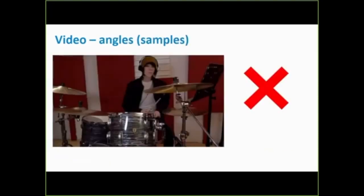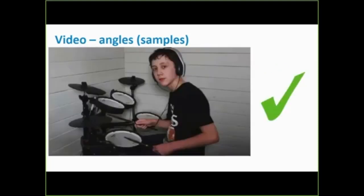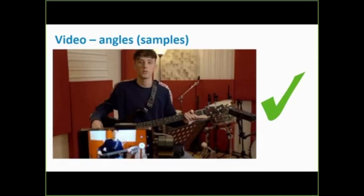They want to see your hands and the way you do things — they want to see that so they can assess. This would be the right angle. You don't have to put it right at the wall, but as long as they can see. This is actually quite a good place because they can catch the snare and the bass — the cymbals are all on the other side. As long as you can see things.